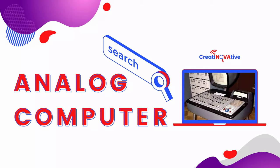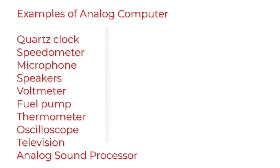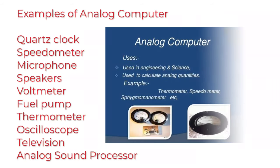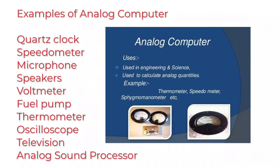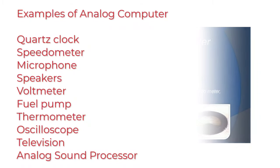Examples of analog computers include quartz clocks, speedometers, microphones, speakers, voltmeters, fuel pumps, thermometers, oscilloscopes, televisions, and analog sound processors.